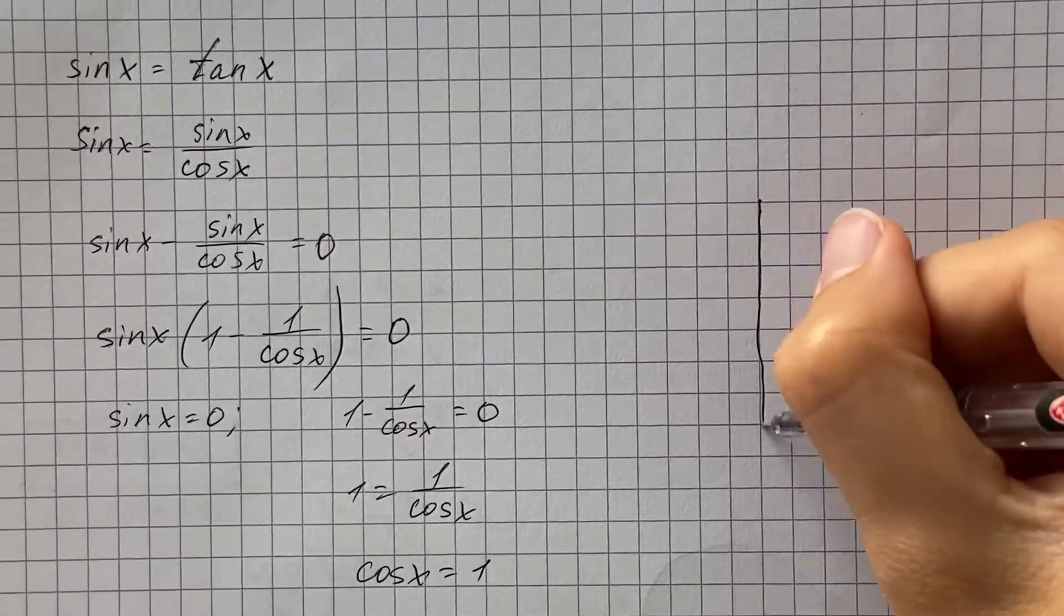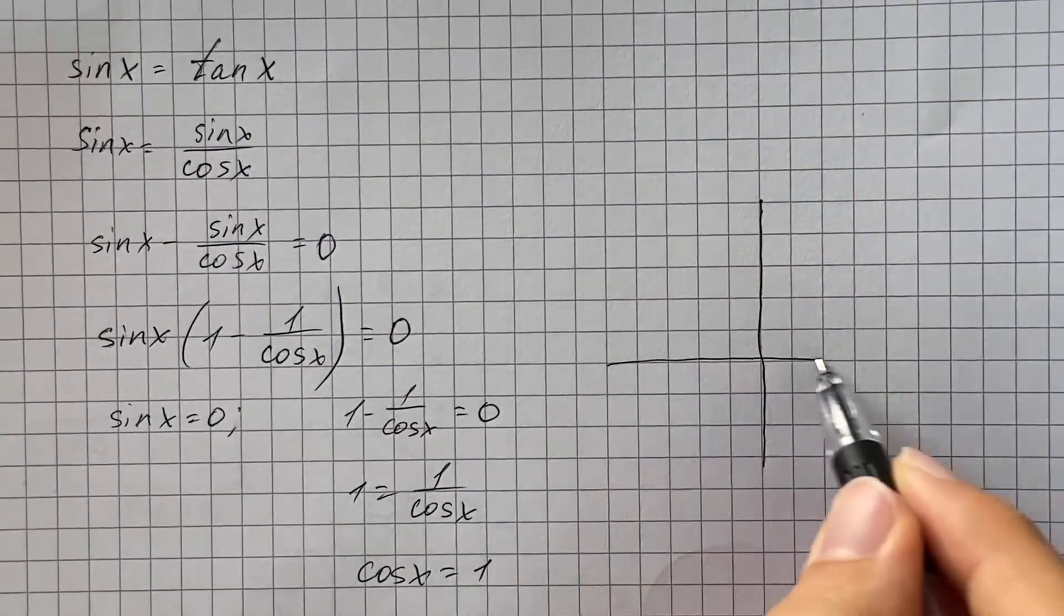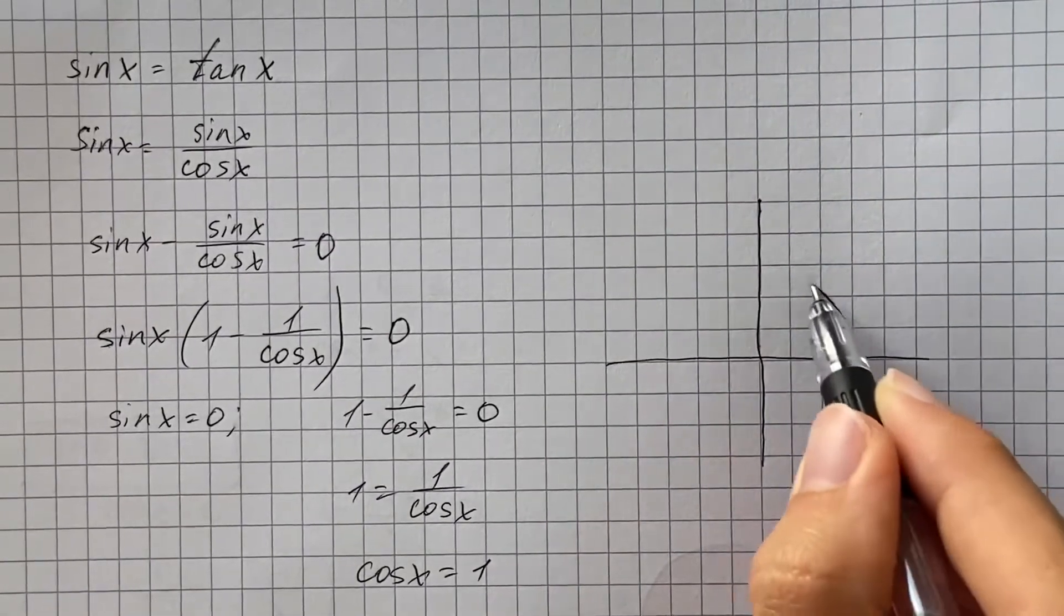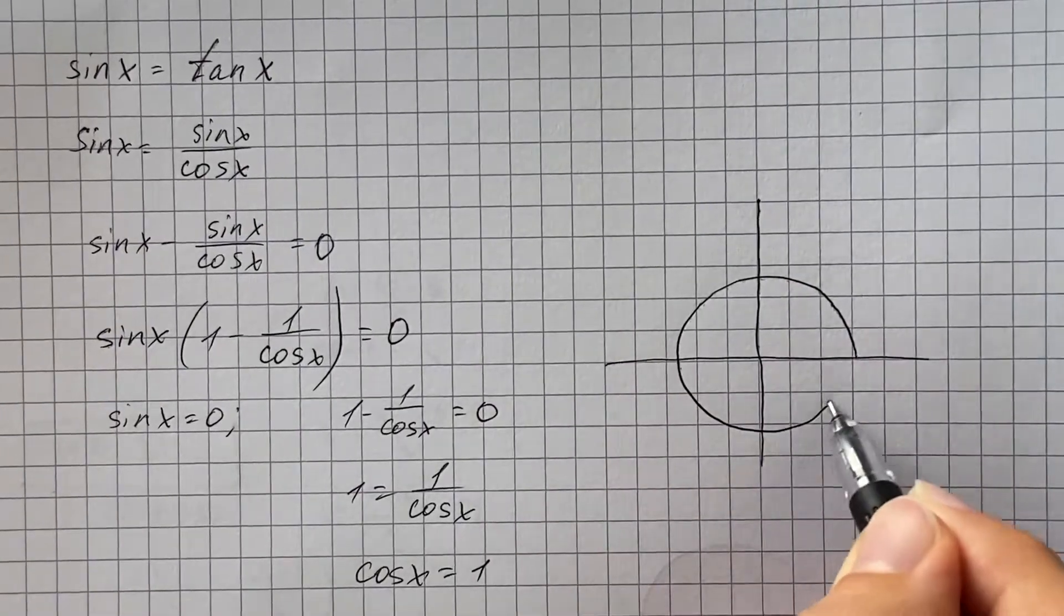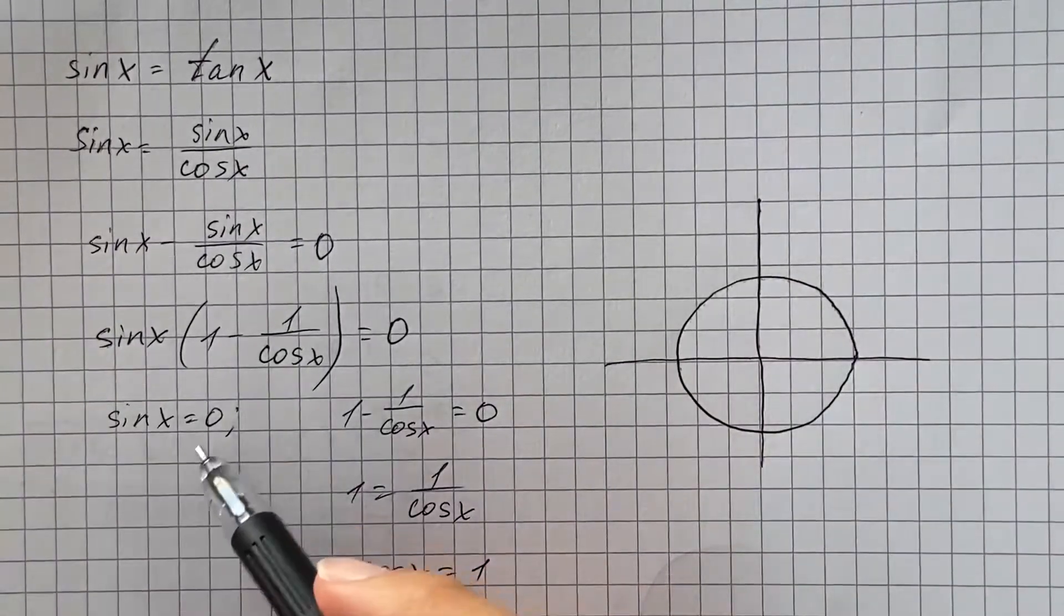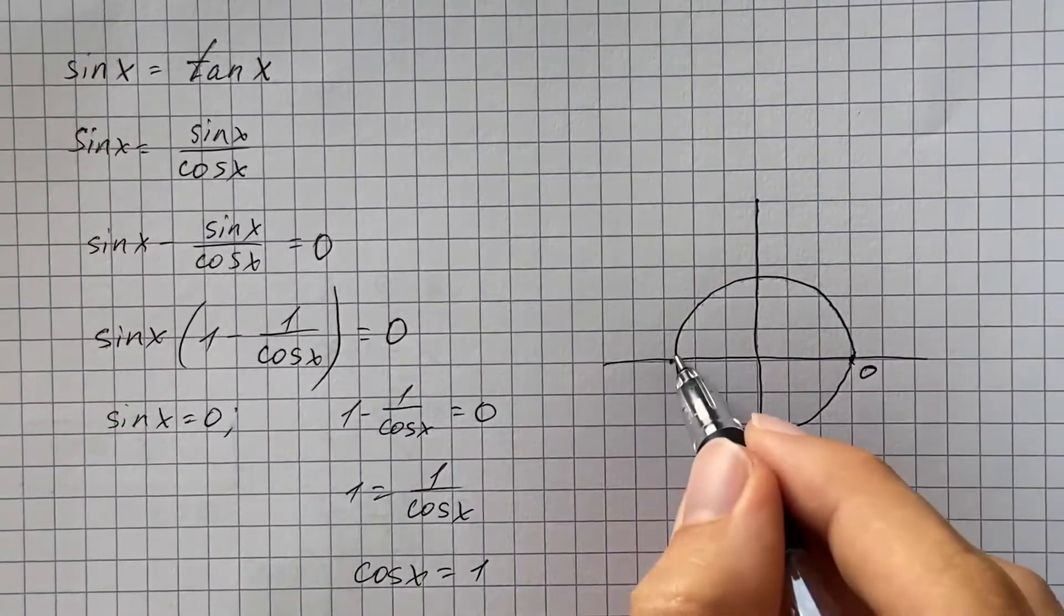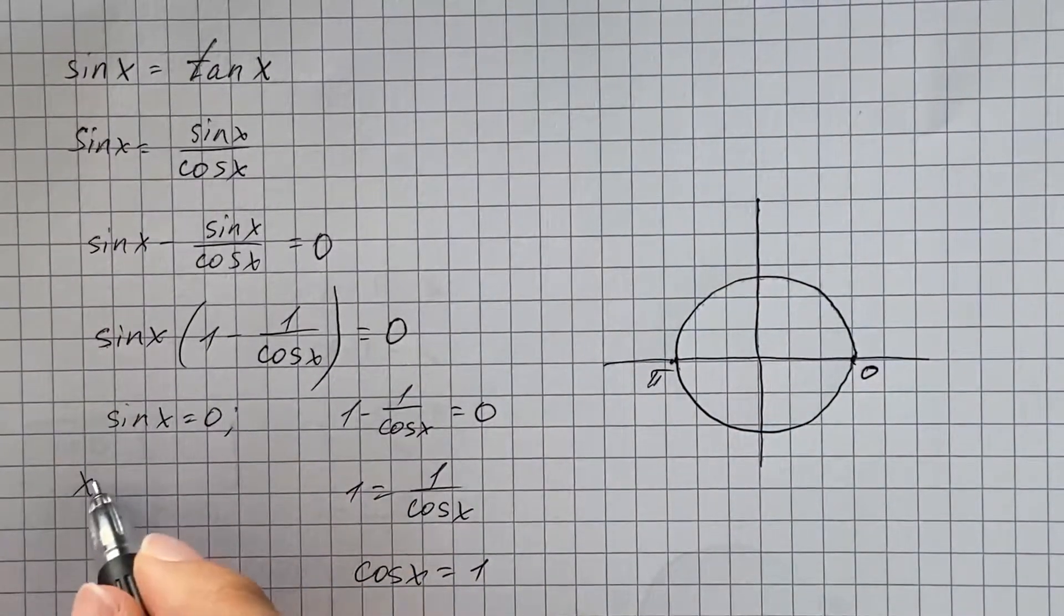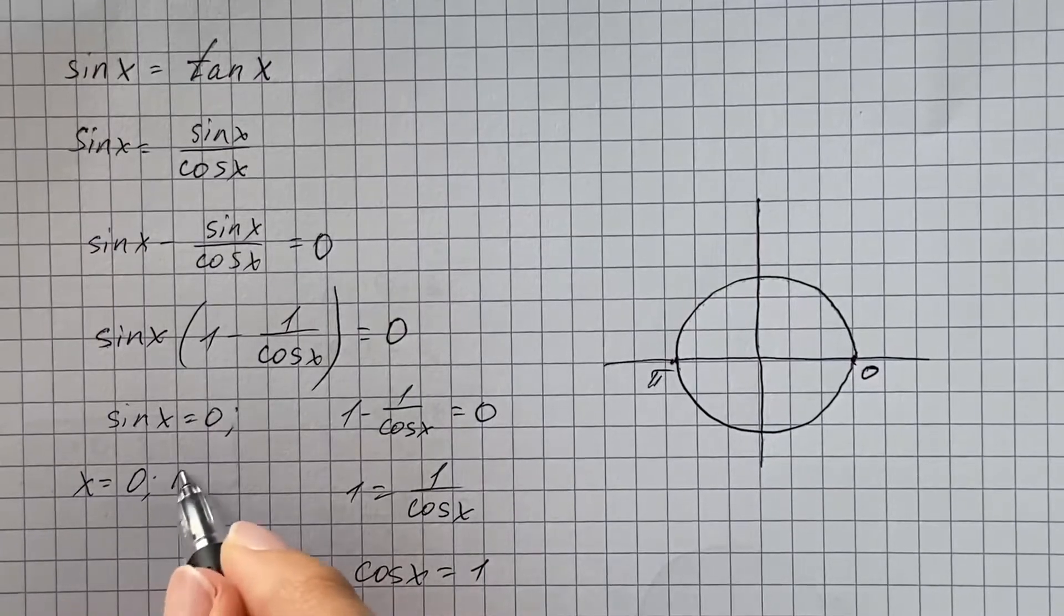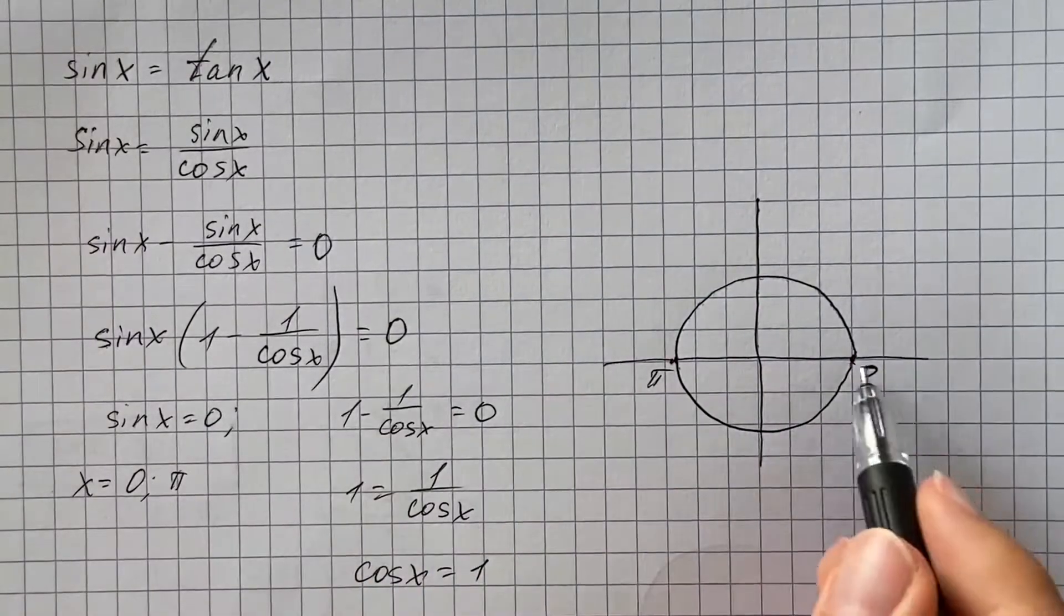Now we're going to use the unit circle. Sine is our y value on the unit circle, so sine equals 0 when the angle is 0 or pi. So it's going to be x equals 0 or pi or also 2 pi.